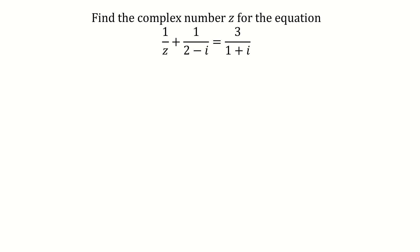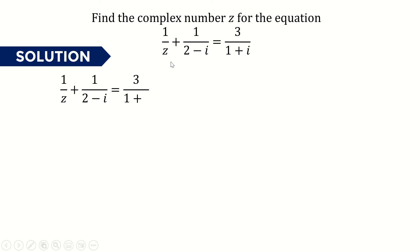Find the complex number z for the equation 1 over z plus 1 over 2 minus i equals 3 over 1 plus i. So we have this complex number equation here and we want to find the complex number z. To solve this question, first we need to rearrange this equation.